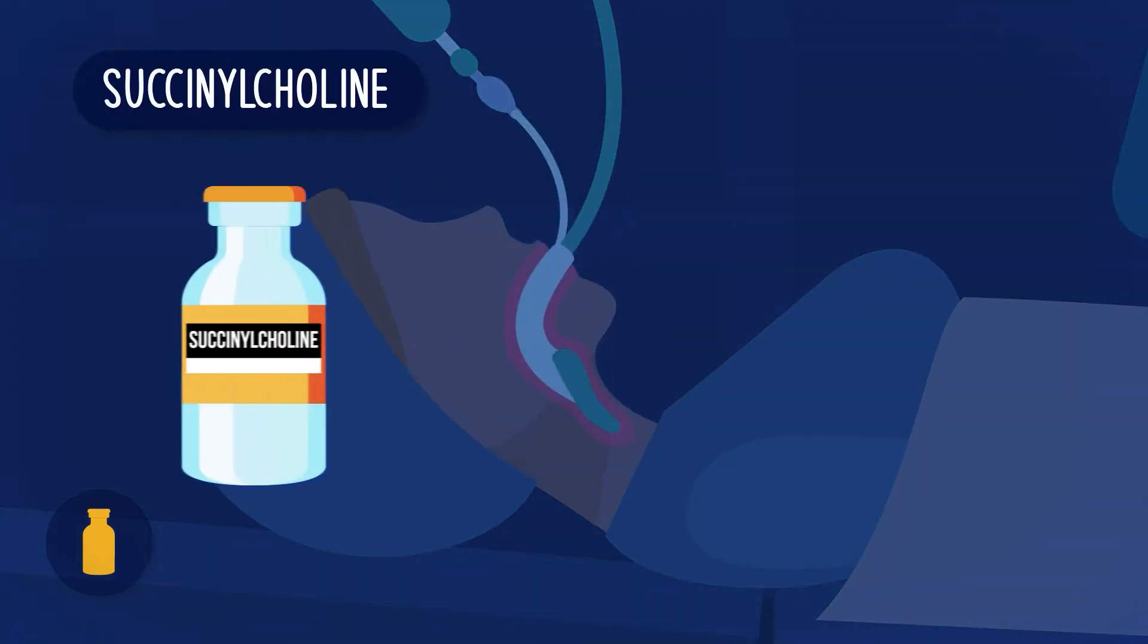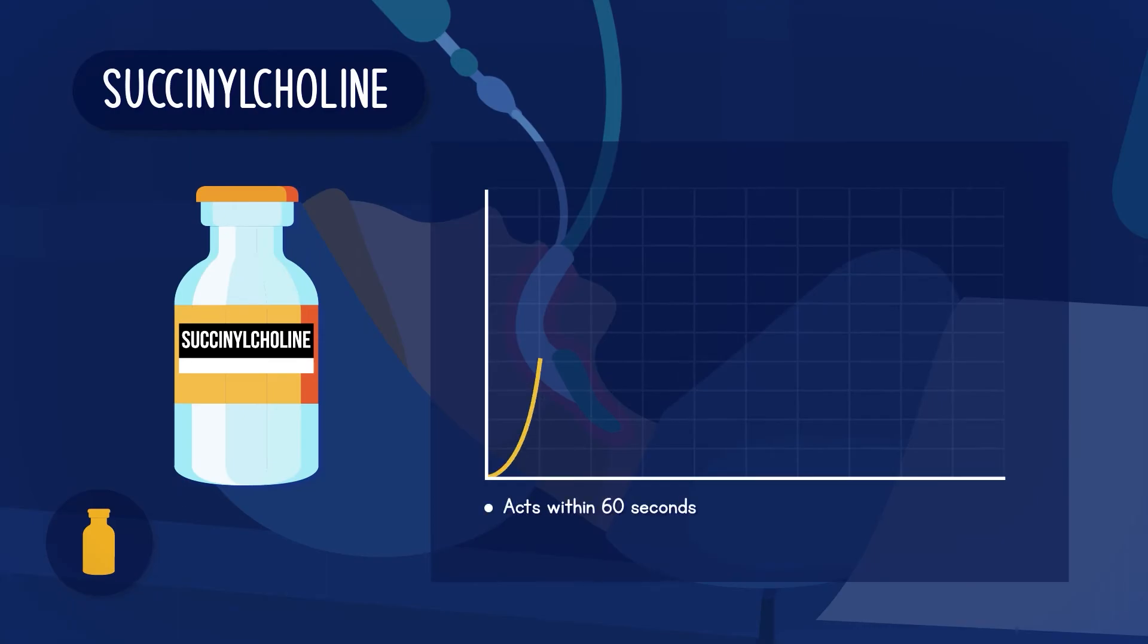An example of depolarizing blocking agent is succinylcholine. Succinylcholine is a short acting agent where the mechanism of action is already apparent within 60 seconds of intravenous administration and can continue to last for up to six minutes.